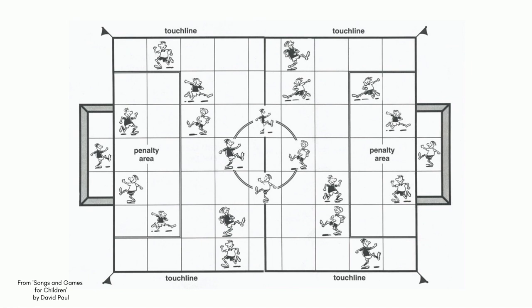An alternative soccer board has different movement rules: a one or two on the dice moves the ball one square, a three or four moves it two squares, and a five or six moves it three squares. The direction a player kicks in is determined by cards with arrows on them, drawn from a pack or acquired during the lesson. There can also be special rules for free kicks, penalties, throw-ins, goal kicks, and corner kicks.